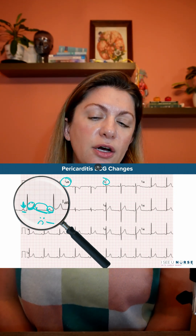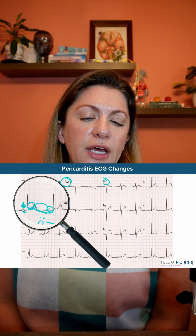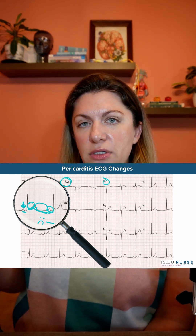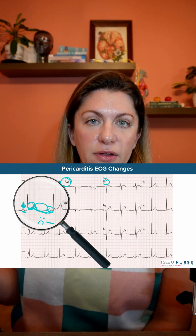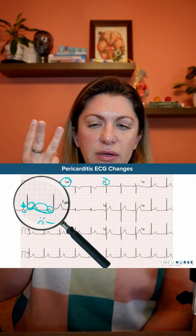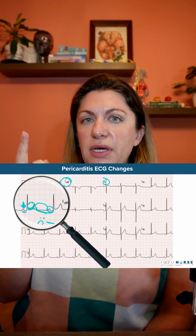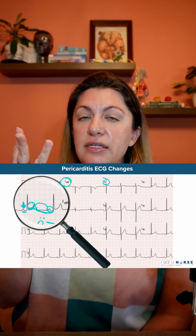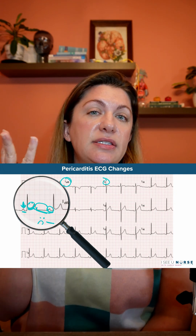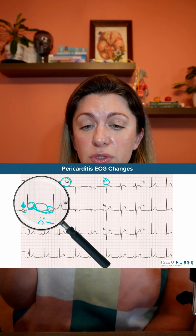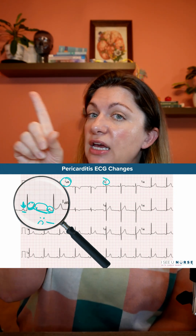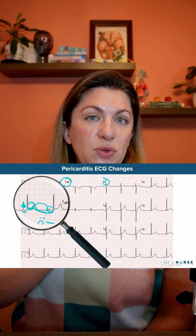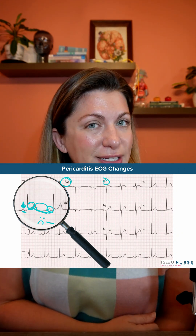You can also see some elevated tall peaked T waves, which is related to the ST elevation. But the three main findings — PR segment depression, concave ST elevation, and TP segment downsloping — seen diffusely with reciprocal changes in AVR and V1, are the signs you will see with pericarditis on a 12-lead ECG.